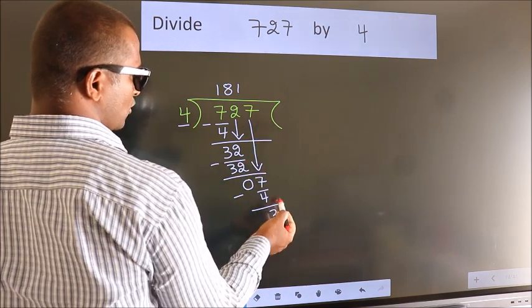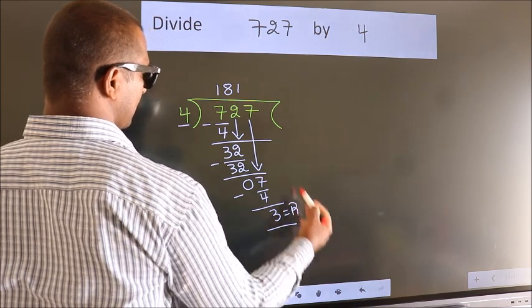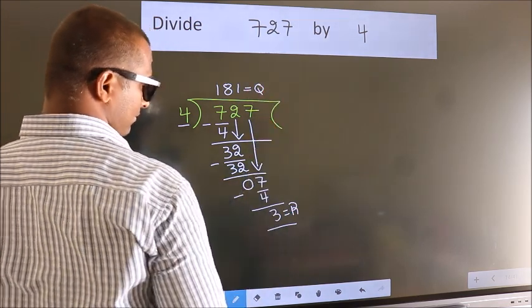No more numbers to bring down, so we stop here. This is our remainder. This is our quotient.